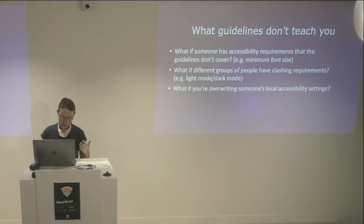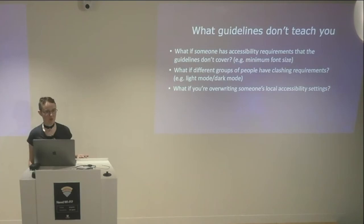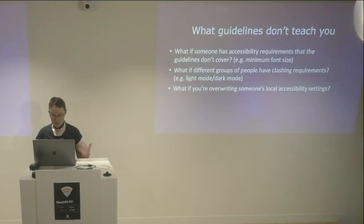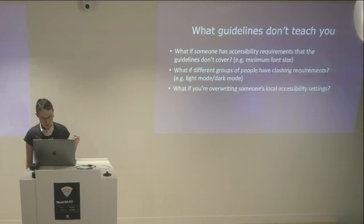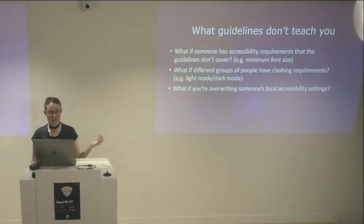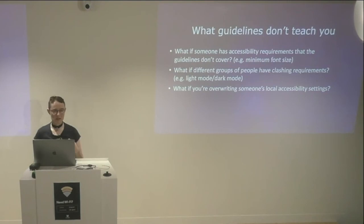What if different groups of people have clashing requirements? Vision impairments is a good one to talk about here, because some people with different vision impairments can have requirements that clash with each other. Some people with vision impairments need to use light modes; some need to use high contrast modes, which tend to be dark modes. That can depend on issues with the amount of light your eyes let in. And what if you're overwriting someone's local accessibility settings? This happens depressingly frequently — people call call centers saying, "I've installed your software and I use high contrast mode but your software's overwriting it."